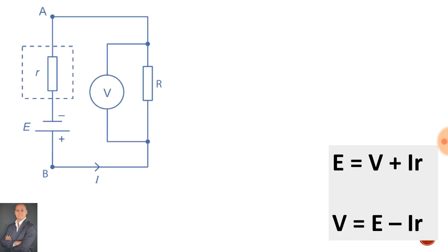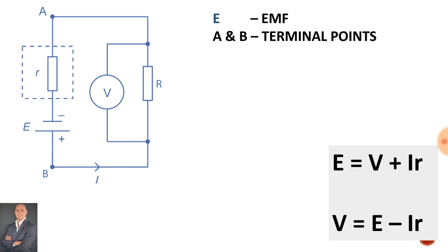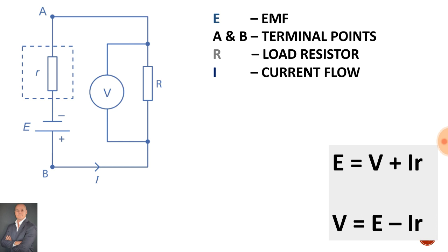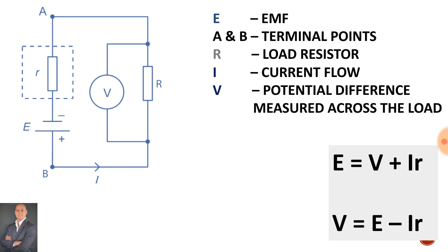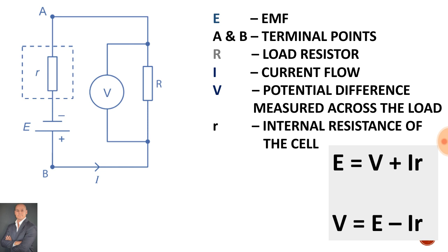Here we have a battery with an internal resistance. E represents the generated EMF. A and B are the terminal points of the battery. R is the external load resistor. I is the current flow in the circuit. V is the potential difference across the load, and small r represents the internal resistance of the cell.